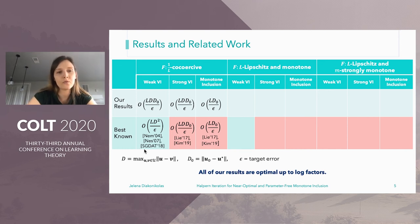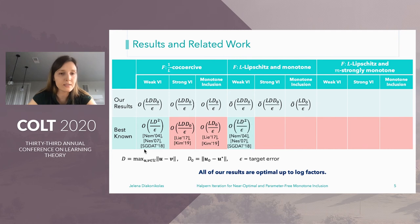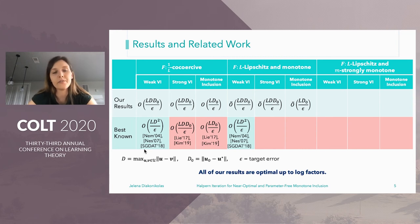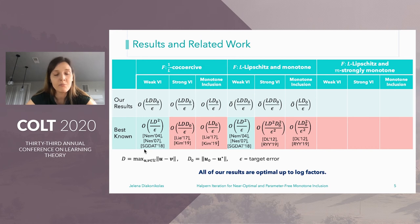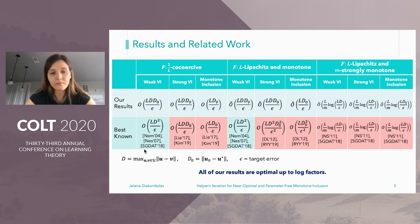Parameter-free methods exist only for weak VI solutions and only for the first two problem classes. For the first problem class our results match the best known, and we expect this is unimprovable. We get parameter-free methods even for strong VI and monotone inclusion. When F is Lipschitz, existing results match ours for weak VI solutions up to a log factor, but for strong VI solutions and monotone inclusion the existing results are not only not parameter-free but also worse by quadratic factors in the diameter D, the initial distance D_0, and the target error epsilon. For Lipschitz and strongly monotone operators, our results are off by a log(L/M) factor from the best known, but unlike existing results, ours are parameter-free.